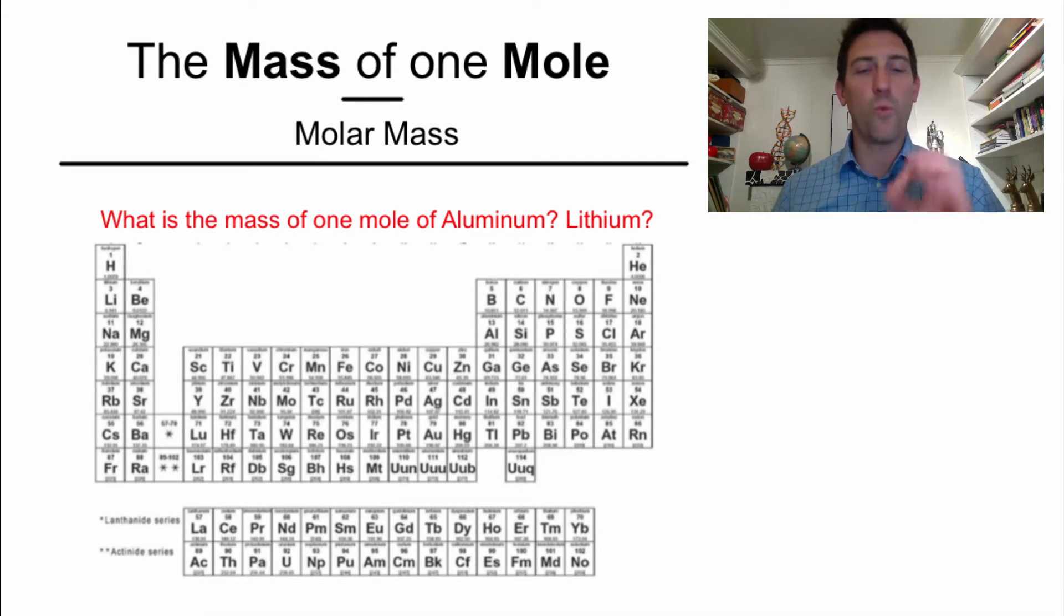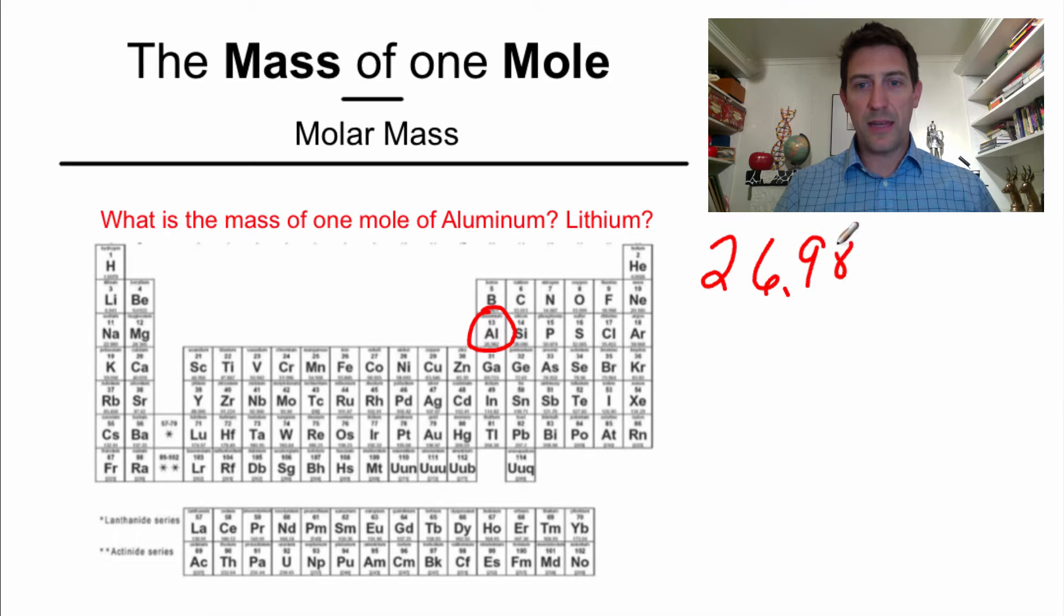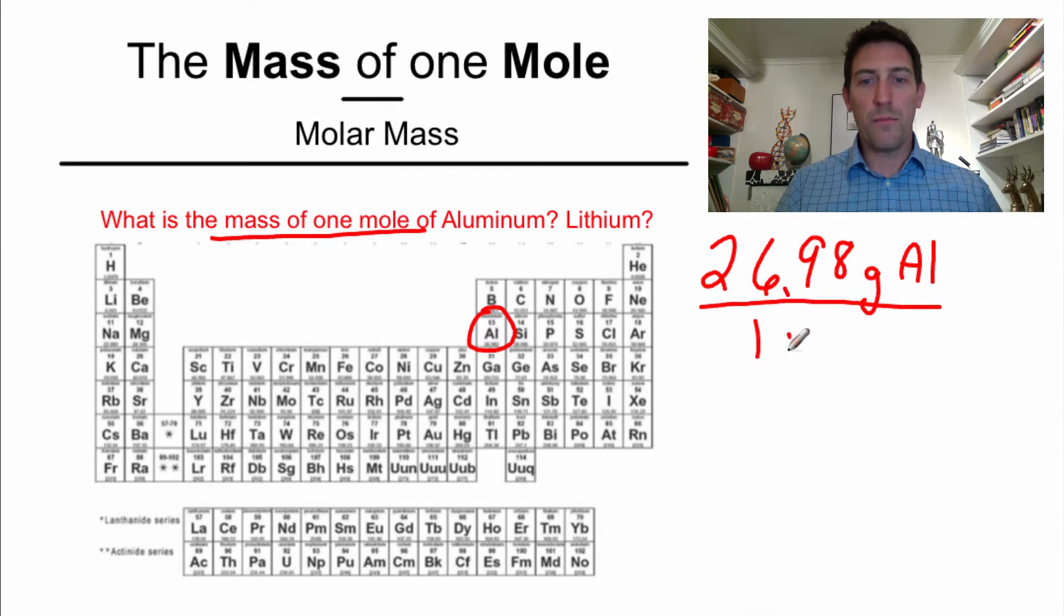It says, what is the mass of one mole of aluminum? So we need to find aluminum on our periodic table, and aluminum is right here, number 13, and aluminum has a mass on the periodic table of 26.98. The great thing about this is, that's also the mass of one mole. So we can do this, 26.98 grams of aluminum per one mole of aluminum.